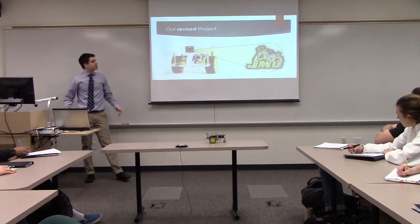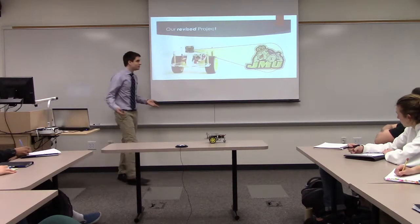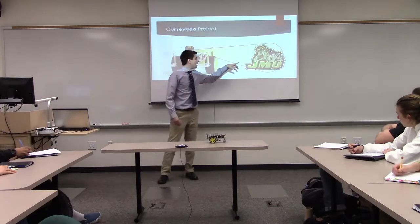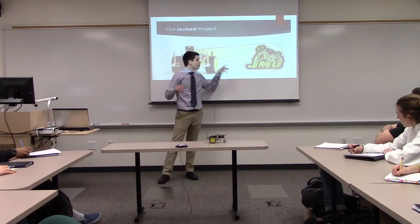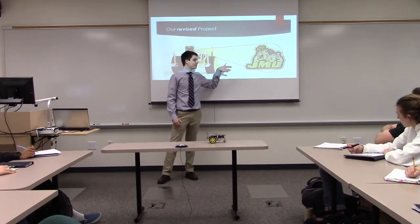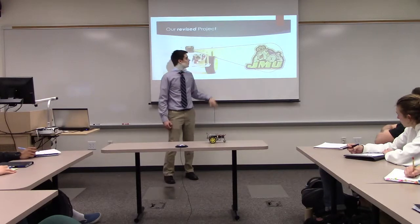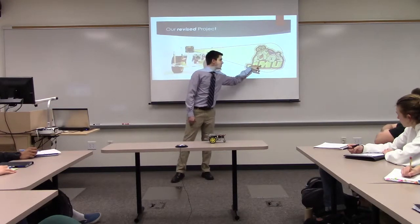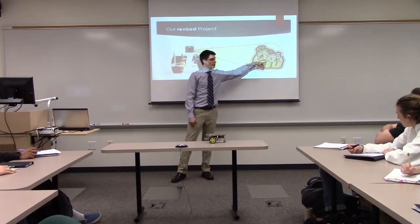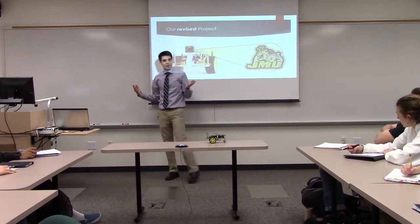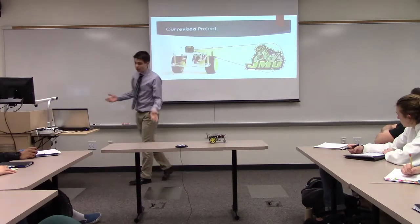We decided to switch to our JMU logo as the target image. It has more colors and more detail, giving the classifier a better way of picking up the specific image. We believe it put a region below the logo to capture the lettering, but since we can't manually set these regions, we can't be certain.